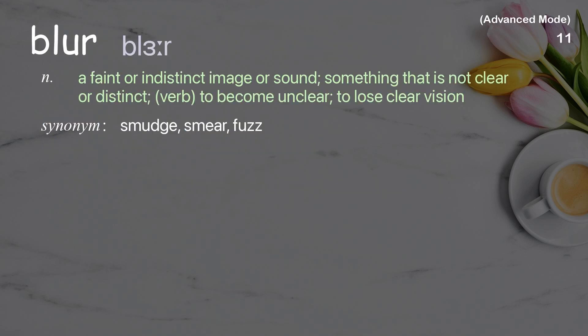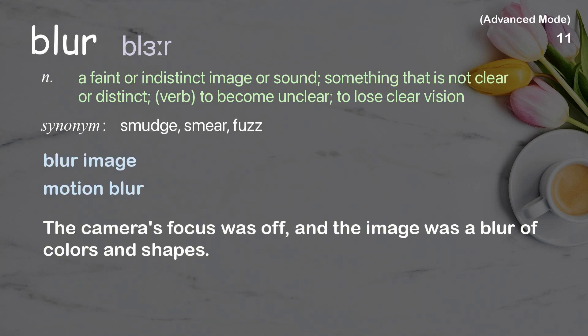Blur: a faint or indistinct image or sound; something that is not clear or distinct. Verb: to become unclear, to lose clear vision. Examples: blur image, motion blur. The camera's focus was off and the image was a blur of colors and shapes.